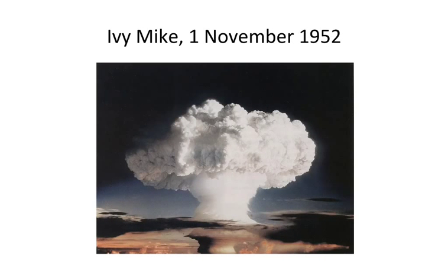The first test of a hydrogen bomb occurred on November 1st, 1952. The bomb was codenamed Ivy Mike, and the so-called Mike shot had an explosive yield of 10.4 megatons — that's 10.4 million tons of TNT equivalent. It was a gigantic explosion; the fireball alone was 4.8 kilometers in diameter. This illustrates just how massive the destructive potential of hydrogen weapons were and are.